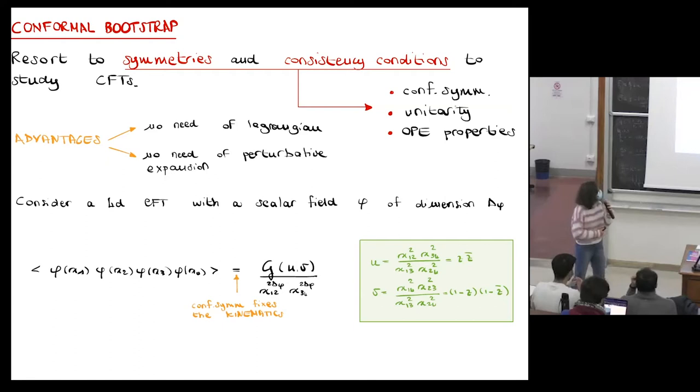So to give you an idea, let me consider four identical scalar operators of dimension delta-phi. Their four-point function is just fixed by conformal symmetry to take this form, having a prefactor depending on the position of these operators times a function of the cross ratios u and v.